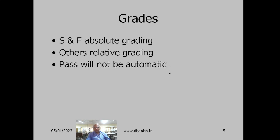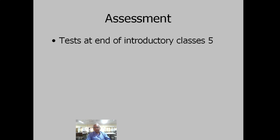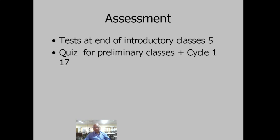But there won't be any automatic pass, so you have to see that you work sufficiently for a pass. Regarding assessment, we have two introductory classes, and at the end of each class there is a small quiz — both together carrying five marks. The quiz for the introductory tour and cycle one will be 17 marks.